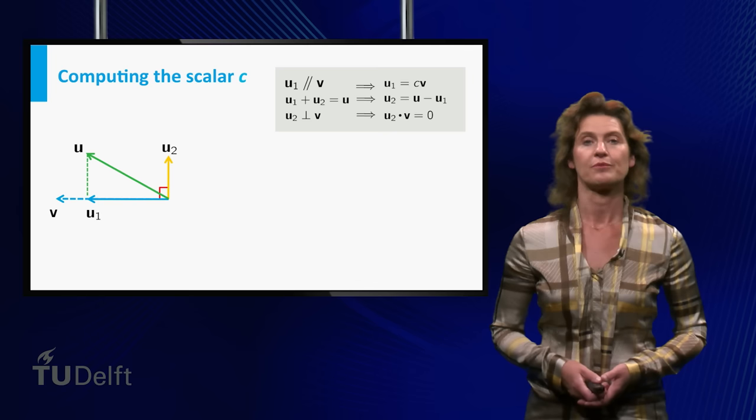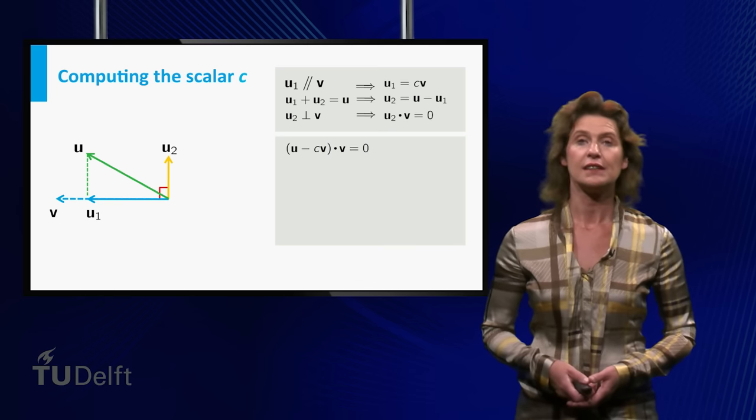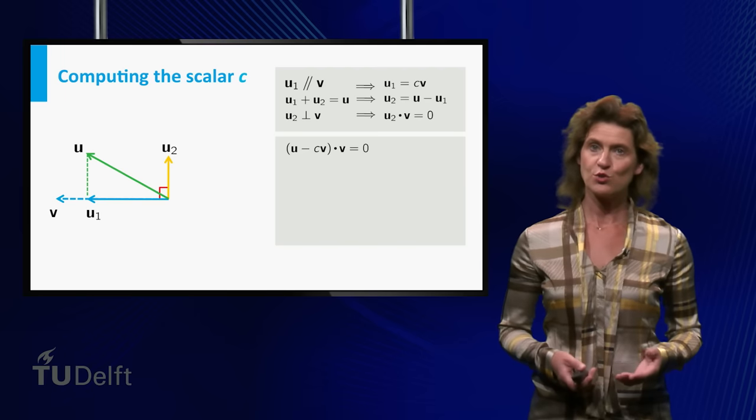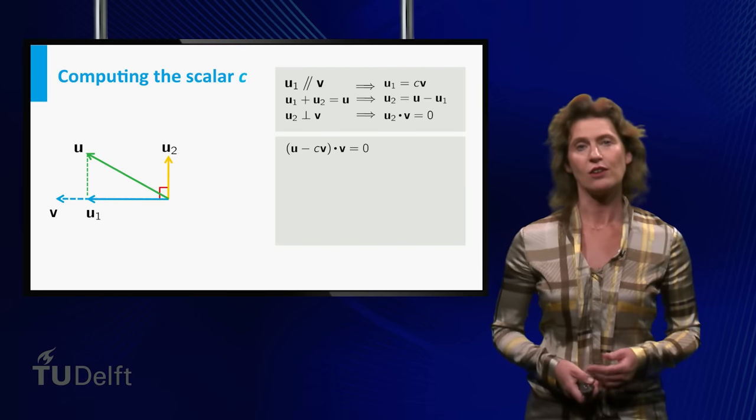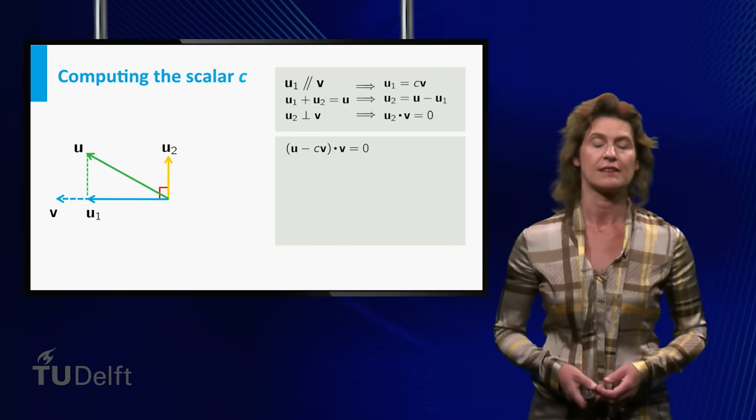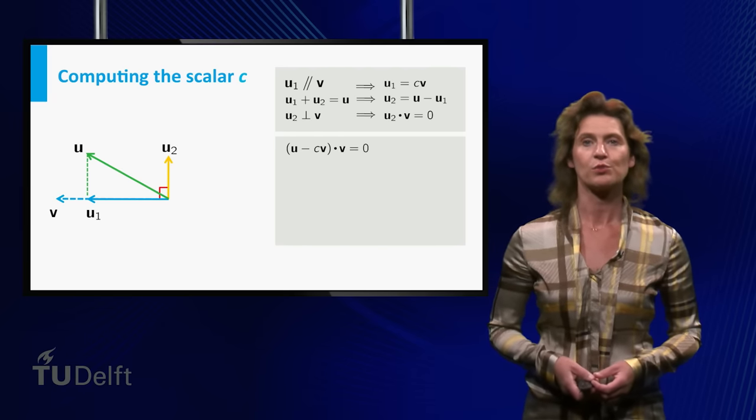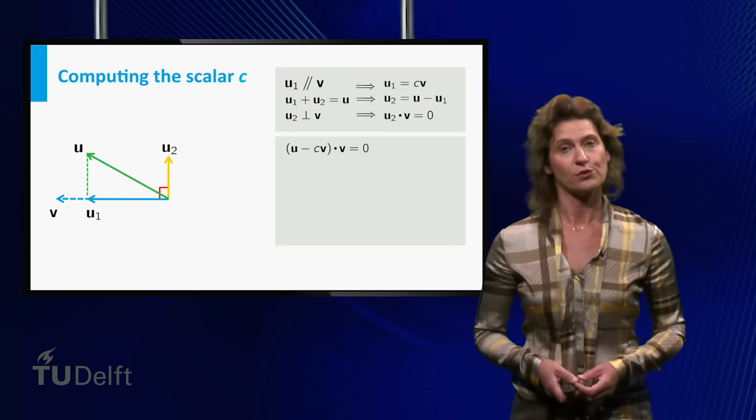Plugging these in, we find the inner product of u minus cv and v equals zero. Well, since u and v are known, this equation contains only one unknown variable, namely c. This means that we can solve for c and thus obtain u1, the projection of u onto v, which is what this was all about in the first place.